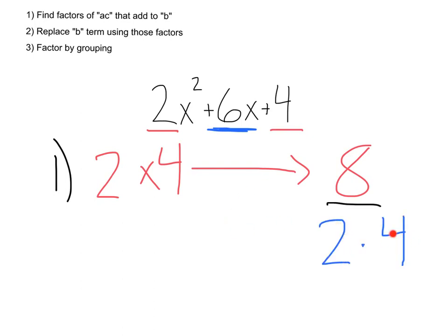Those factors are going to be 2 times 4. 2 times 4 is 8. 2 plus 4 is 6.